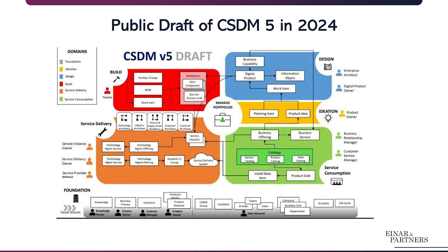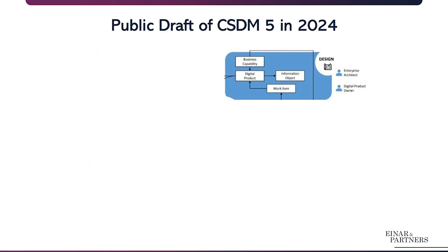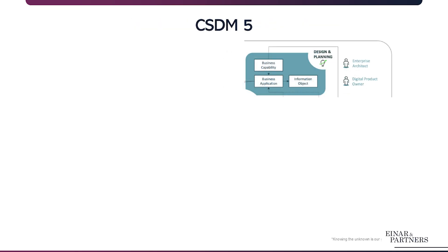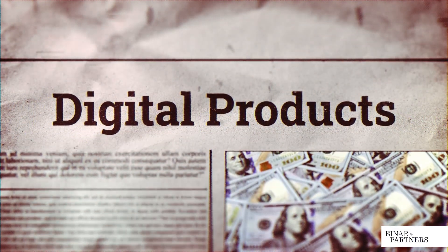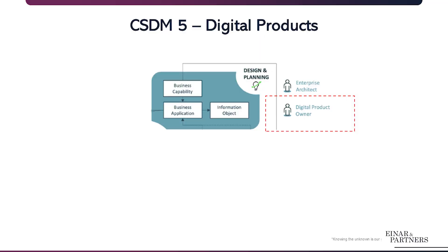We're also seeing a shift in thinking. In the draft of CSDM5, we saw that the business application was being renamed to digital products. While the label of business application still remains in the CSDM, it's being redefined conceptually as a digital product — a more modern way of looking at a product-aligned service model. An example is the new role of digital product owner. If you're curious about digital products and how to work in ServiceNow, check out our extended article in the description below.